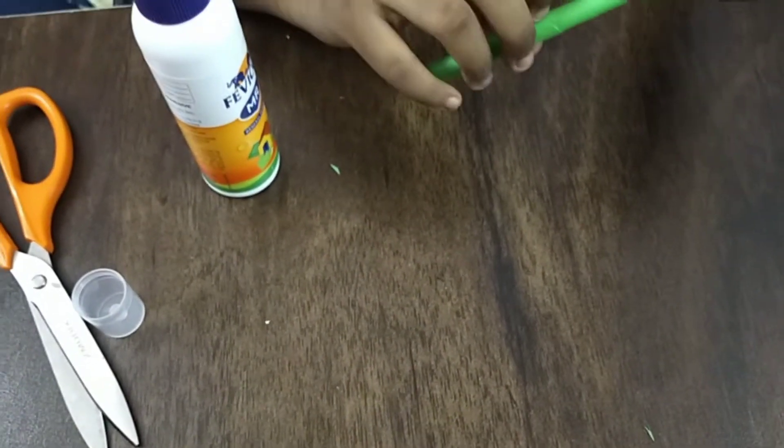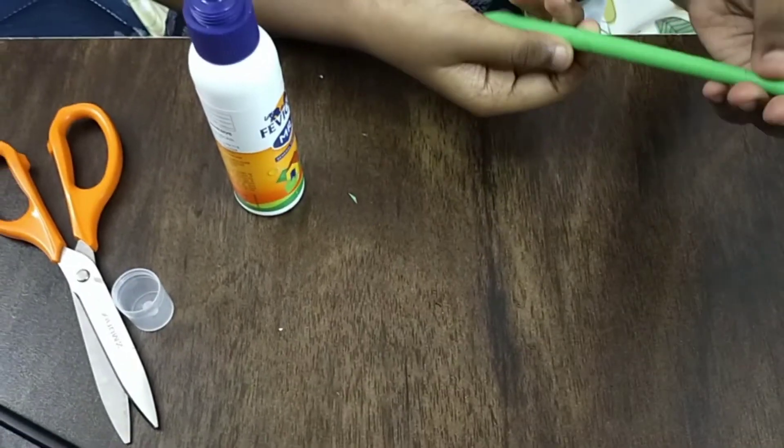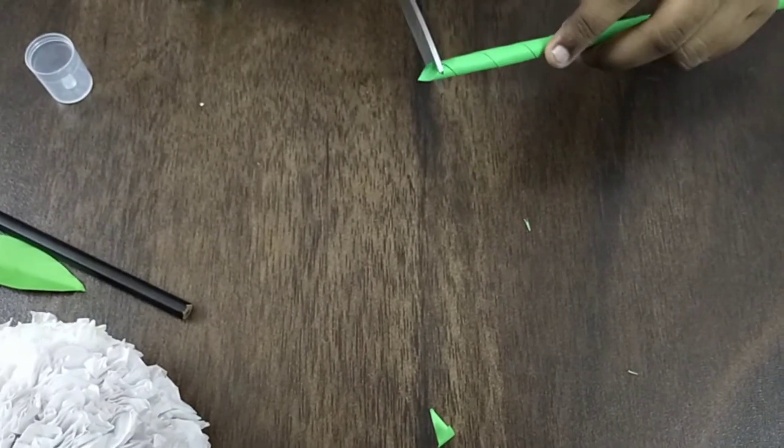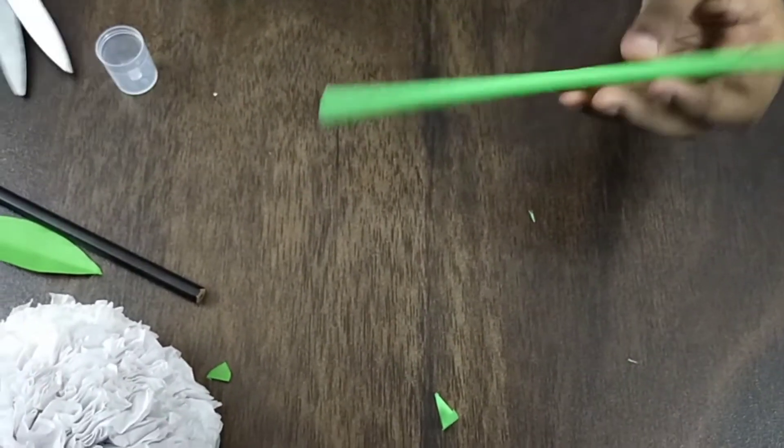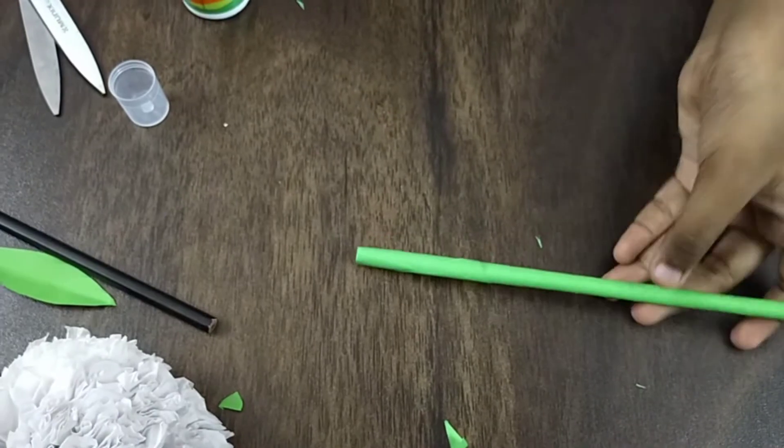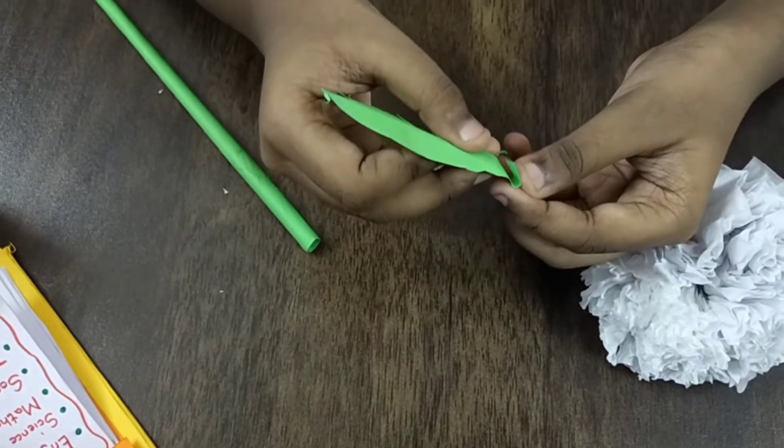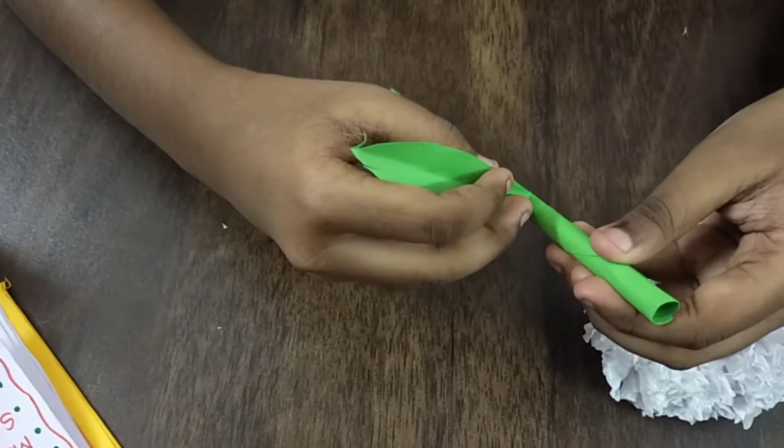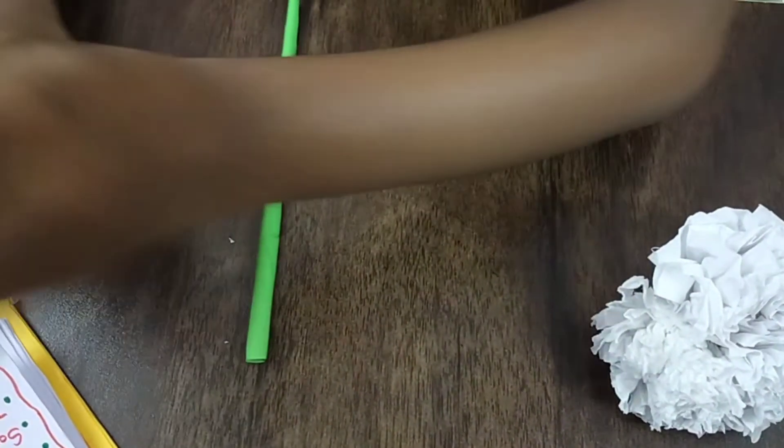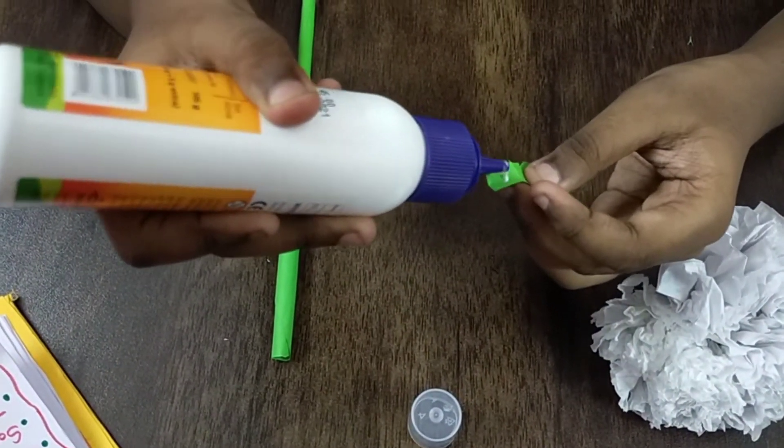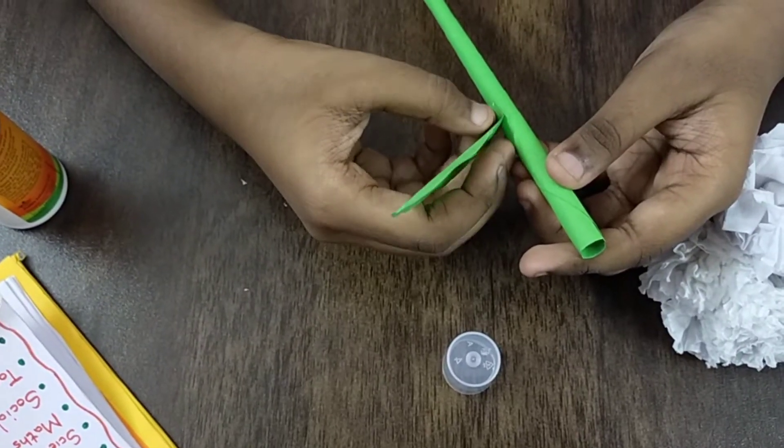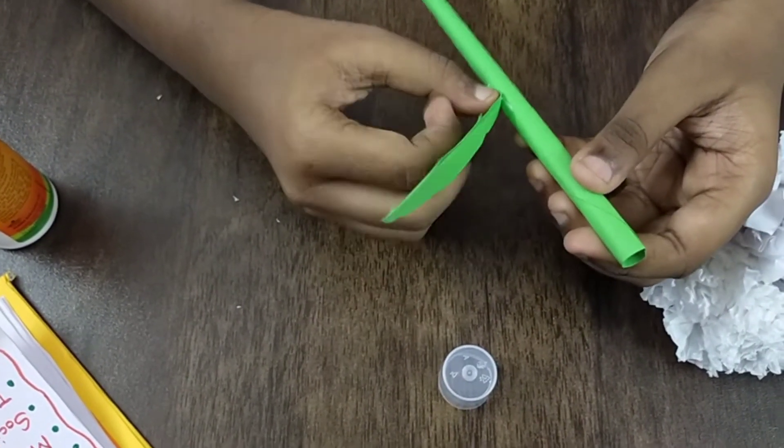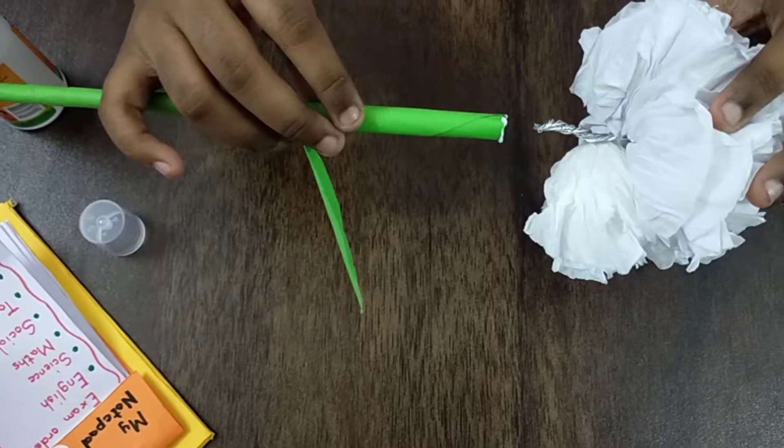So we've got it. So now I cut these edges which are peeping out. Don't make it too short. Now I fold the leaf's ending part to the back side like this, right, stick it like this. In here I stick it, and stick it low if your flower's too big.